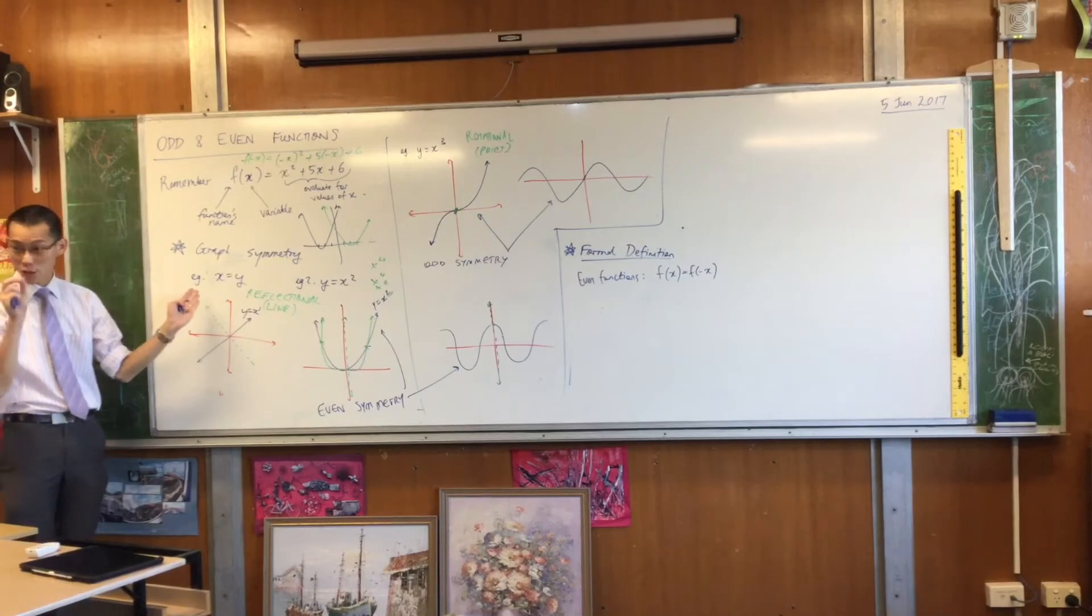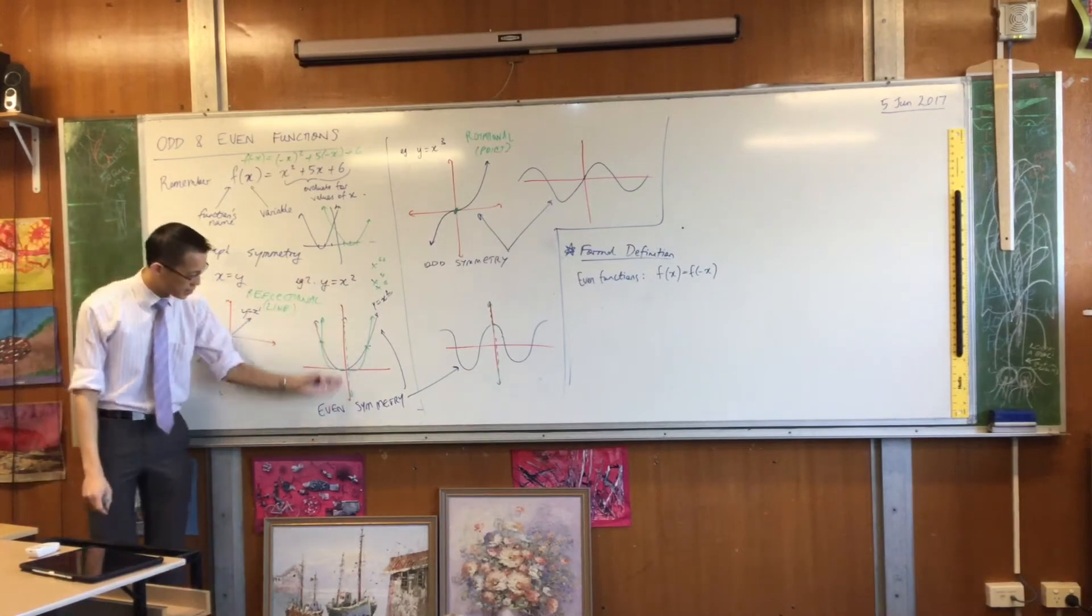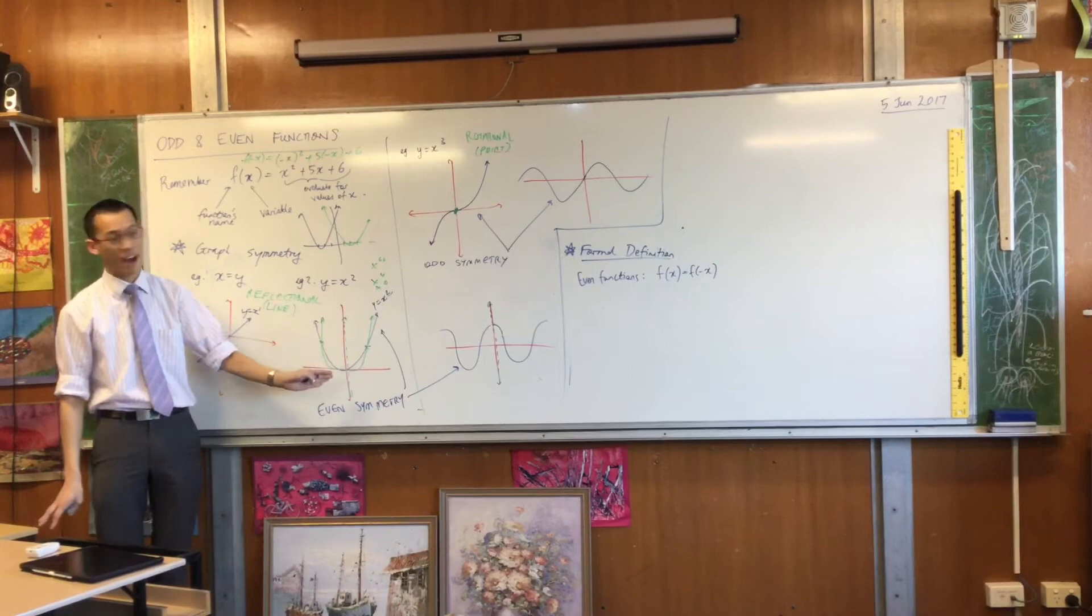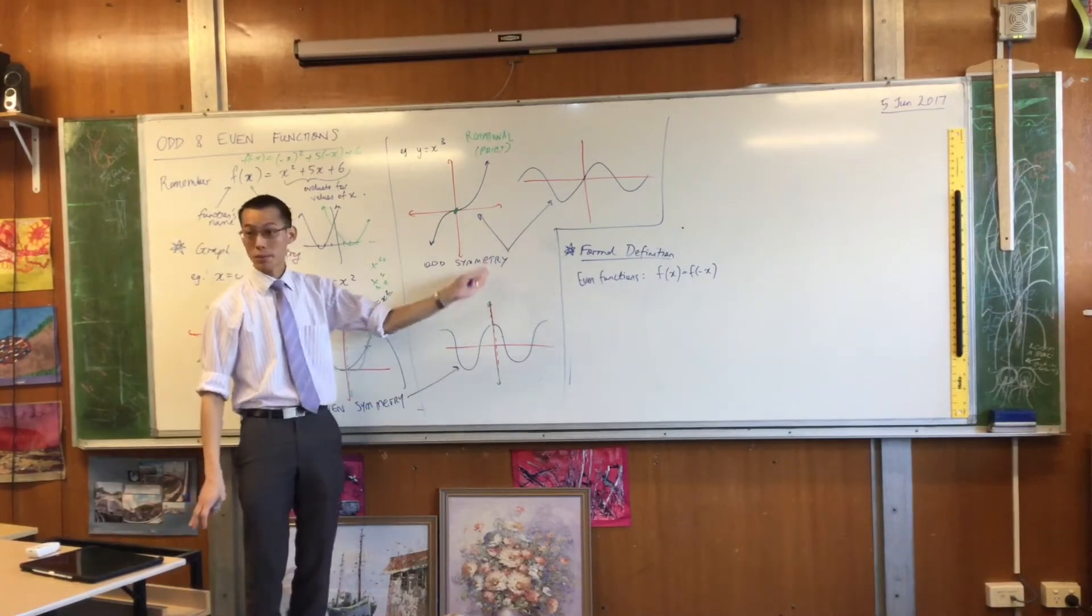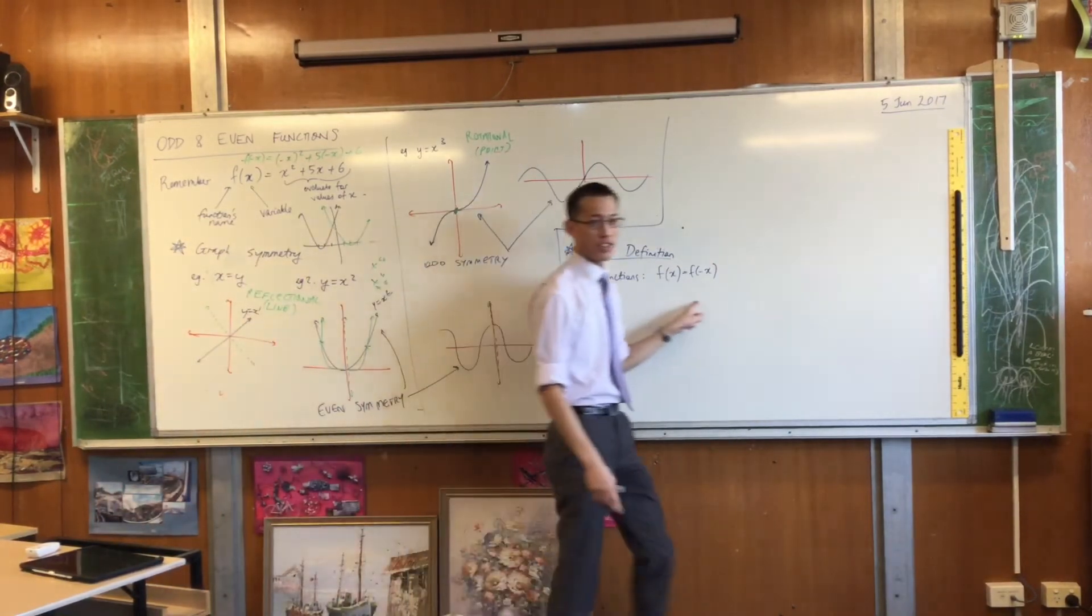What gives me truly even symmetry is if it's this y axis, x equals zero. That's where I have my symmetry. So this is what an even function is, f of x equals f of negative x.